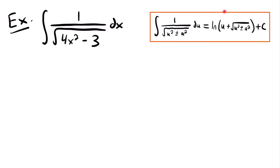And so when we integrate this function, we have a negative sign in the square root here, and so our solution is going to have a negative sign, not a plus sign. So that's how this integration rule is going to work. And so now in order to use this rule, let's set u squared equal to this function of x, and a squared equal to 3. And then we'll be able to solve for our values of u and a.